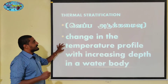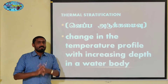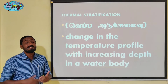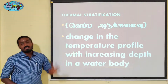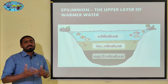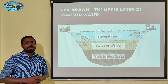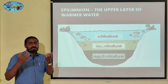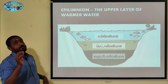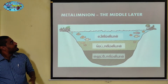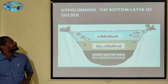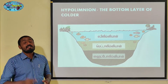The first definition is: change in the temperature profile with increasing depth of a water body, such as a pond, is called thermal stratification. Epilimnion is the upper layer of warmer water, where warm temperature is maintained. Metalimnion is the middle layer where intermediate temperature is maintained. Hypolimnion is the bottom layer of the pond and it is cooler.